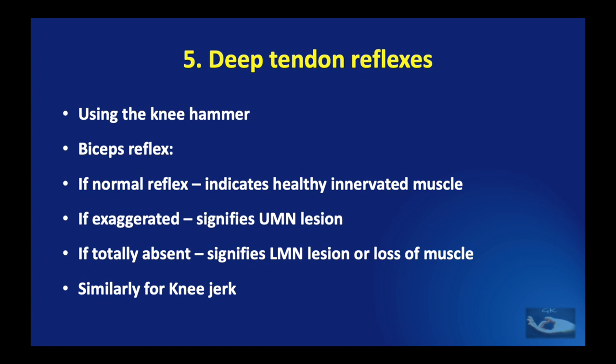The deep tendon reflexes are performed using the knee hammer. The biceps reflex, if normal, indicates a healthy innervated muscle. If exaggerated, it signifies an upper motor neuron lesion. If totally absent, it signifies a lower motor neuron lesion or loss of muscle. Similarly, the knee jerk is also performed.